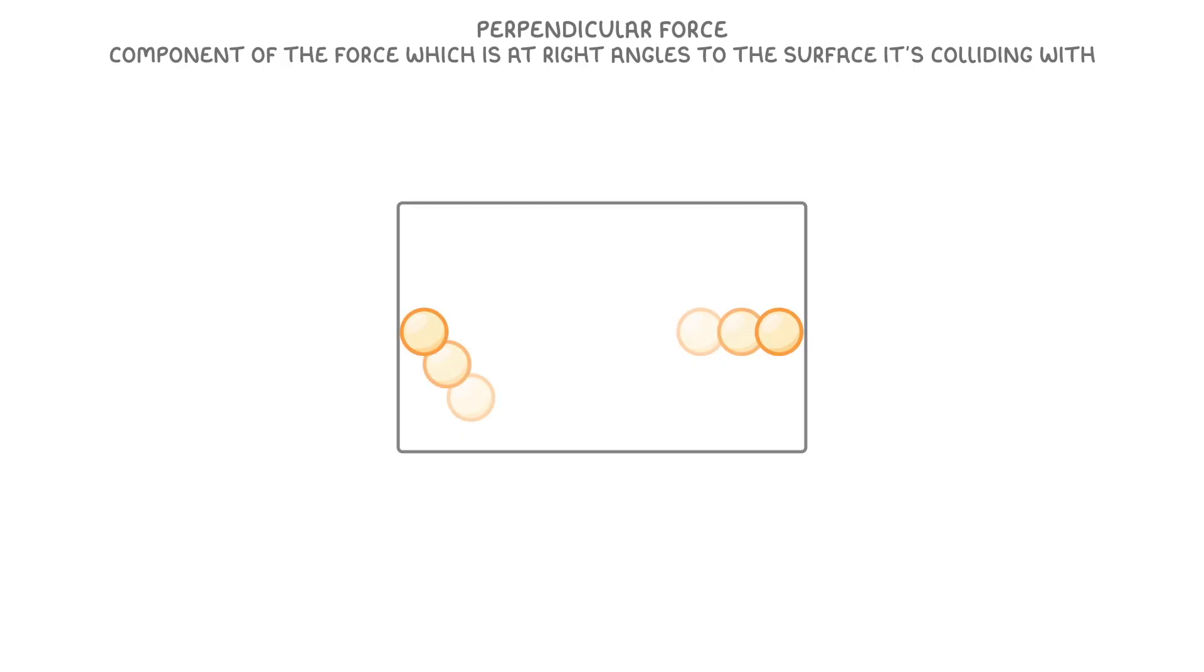Whatever the source is though, one important thing to be aware of is that we always use the perpendicular force, which means the component of the force which is at right angles to the surface it's colliding with. To understand what this means, imagine that two particles strike the walls of this container, both with the same force. This particle on the right is striking at a perfect right angle, or perpendicularly to the surface. This means that the entire force would be used to generate pressure on the container wall.